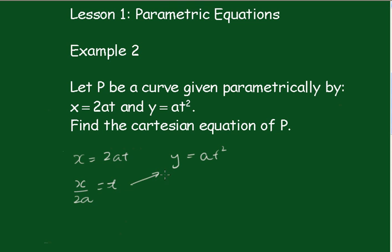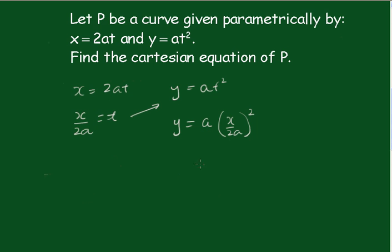So now I can substitute that t in here. So y will be equal to a outside of x on 2a all squared. And of course that gives me y equals ax squared over 4a squared.